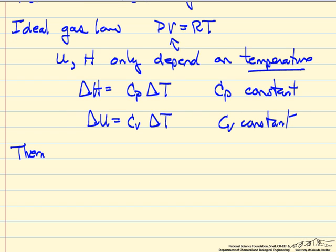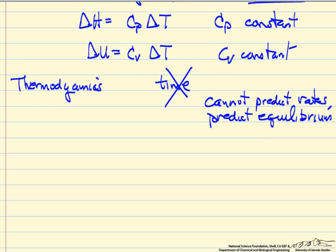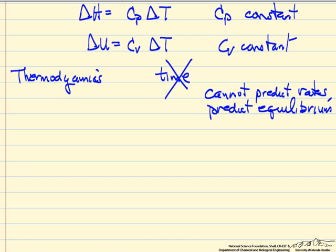So one of the important things to keep in mind when we're talking about thermodynamics is we're not going to talk about time. In other words, we can't predict rates from thermodynamics. What we can predict is equilibrium, meaning if I wait a long enough time then this is where I'll end up in terms of phase equilibrium or chemical equilibrium.